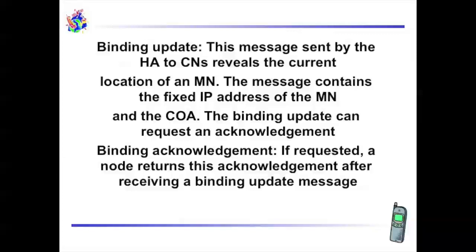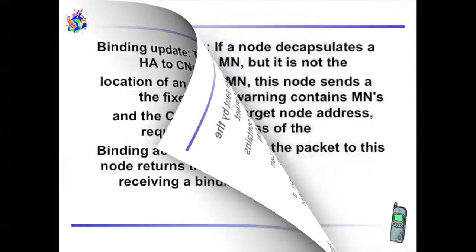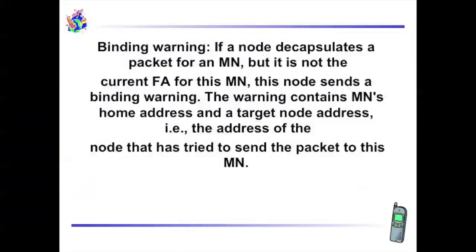Binding acknowledgement: if requested, a node returns this acknowledgement after receiving a binding update message. Binding warning: if a node decapsulates a packet for an MN but it is not the current FA for this MN, this node sends a binding warning. The warning contains the MN's home address and a target node address — that is, the address of the node that has tried to send the packet to this MN.